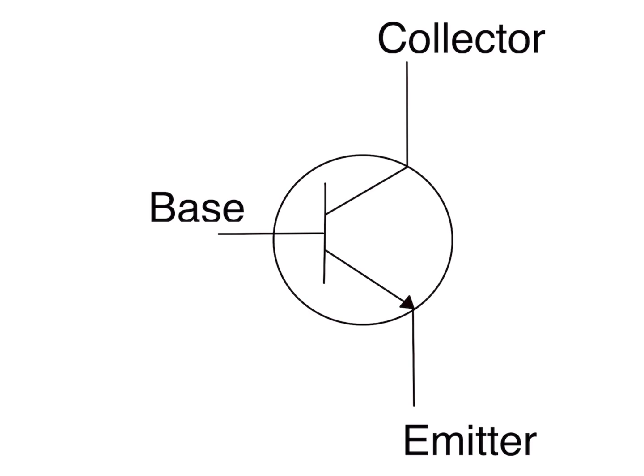Current will flow through here and that will turn this on, where a large amount of current this way can flow through there. Let's look at a basic use of the transistor.